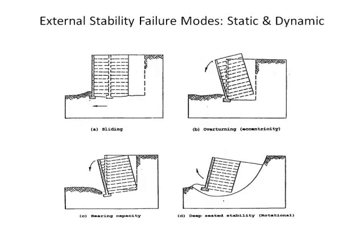Here we have some external stability failure modes, applicable to both static and dynamic cases. Sliding, overturning, and bearing capacity failures need to be investigated. The fourth is a slope stability type of problem better suited for slope stability software such as X-stable. The maximum thrust acting on a wall generally occurs when the wall is translated or rotated toward the backfill, while the minimum soil thrust is the opposite. The magnitude and distribution of dynamic wall pressures are influenced by the mode of wall movement — translation or rotation.